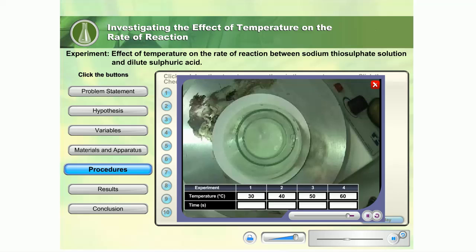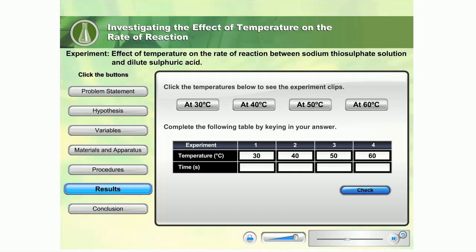Repeat the experiment using the same volume and concentration of both solutions at different temperatures as shown in the table. Record the time taken for the process at different temperatures. Key in the recorded time in the table provided.